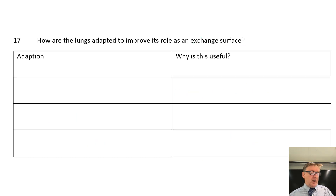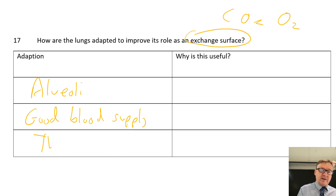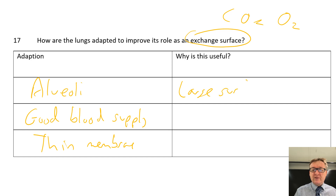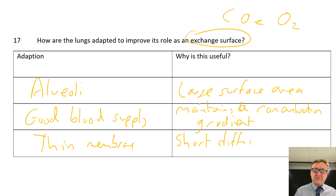Question number seventeen: how are the lungs adapted as an exchange surface? We're talking about carbon dioxide and water exchange. We've got alveoli - little bags at the end of the bronchi - a good blood supply, and a thin membrane. The alveoli give a large surface area; the good blood supply maintains a concentration gradient; and the thin membrane gives a short diffusion distance. In an exam, if they say 'exchange surface', those three things are likely to be asked about.